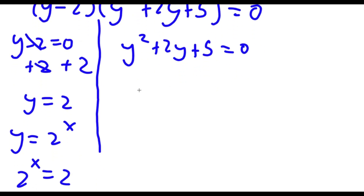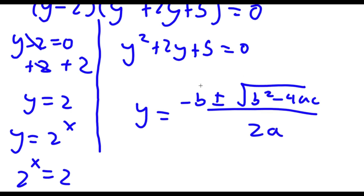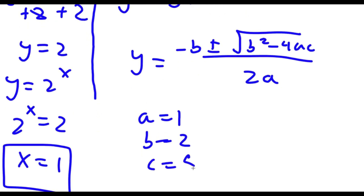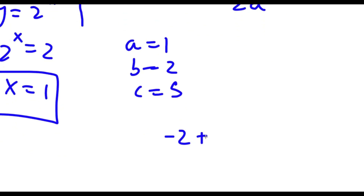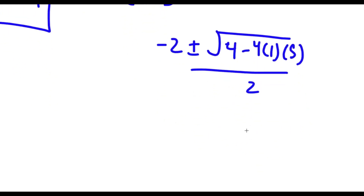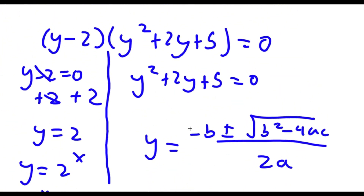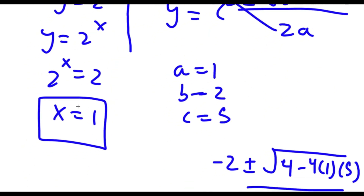Now for y squared plus 2y plus 5, I'm going to use the quadratic formula: negative b plus or minus the square root of b squared minus 4ac all over 2a. In this case a is 1, b is 2, and c is 5. So I have negative 2 plus or minus the square root of 4 minus 4 times 1 times 5, all over 2. This is equal to negative 2 plus or minus the square root of 4 minus 20, and 4 minus 20 gives the square root of negative 16. This is negative, meaning it would not work out because you can't take the square root of a negative number. So my only solution is x equals 1.